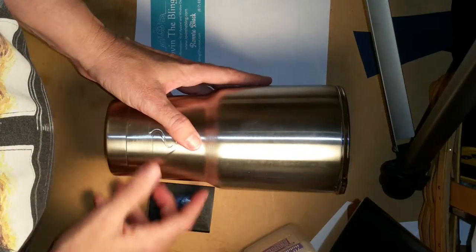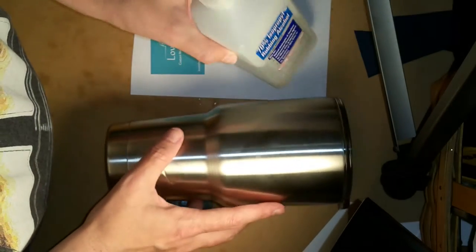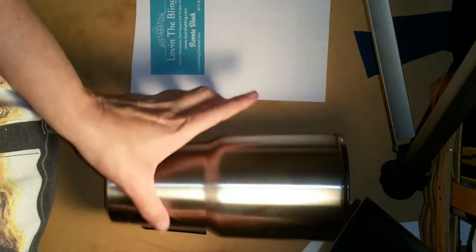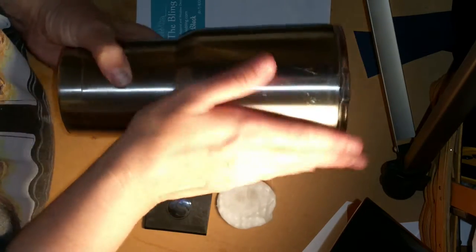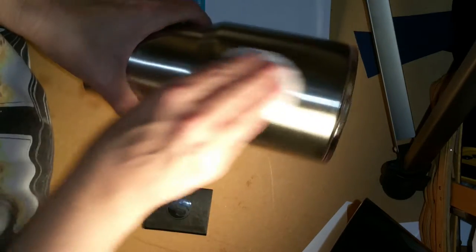I'm using this 30 ounce Ozark as a sample. What you want to do when you get your decal is first you want to clean your Ozark mug with an alcohol swab on the surface you're actually going to place the decal. I'm just going to clean this entire surface. Let it air out, let it dry.